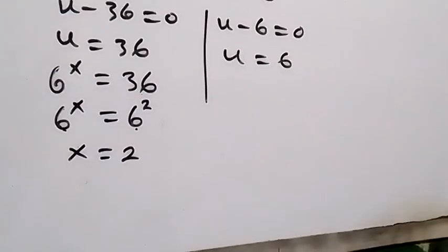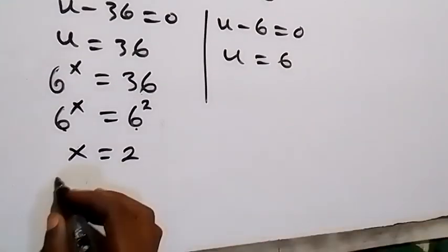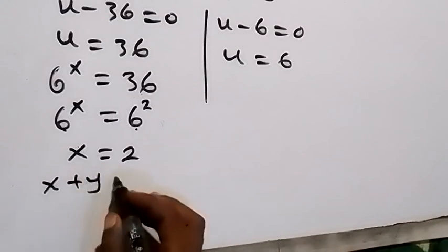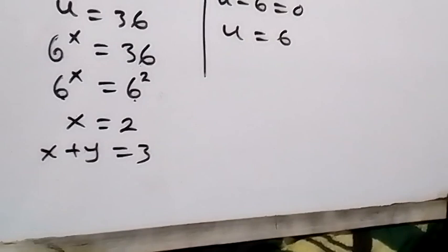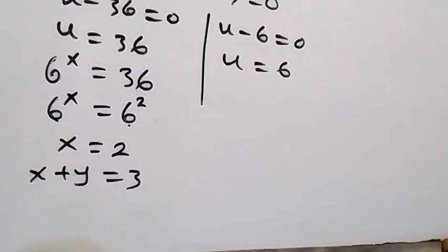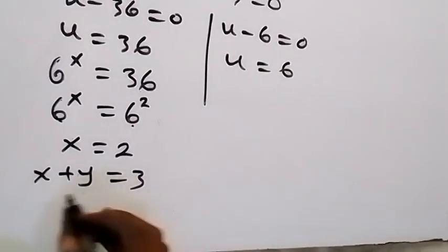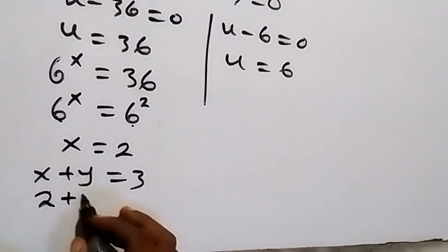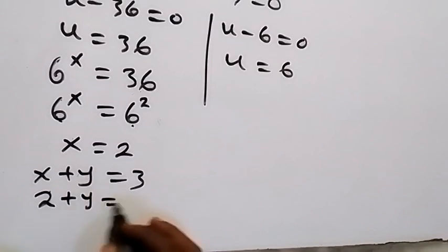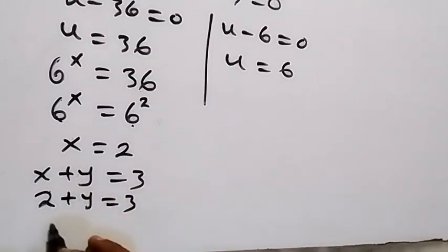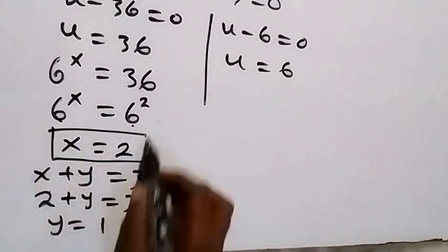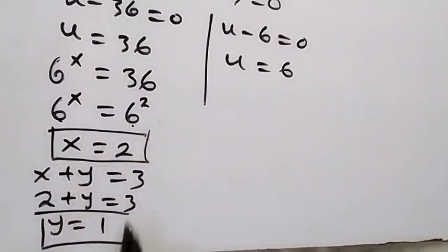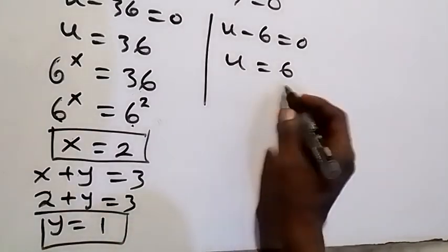Using equation 2, x plus y equals 3, and substituting x equals 2: 2 plus y equals 3, so y equals 3 minus 2, which is 1. Therefore x equals 2 and y equals 1 for the first solution.